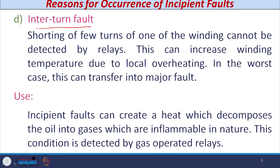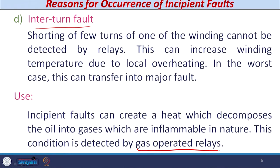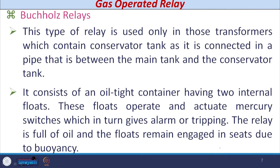Let us see how to detect incipient faults. Whenever incipient faults occur — due to interturn faults, leakage of oil, or other reasons — they produce heat. This heat decomposes the oil into gases, which are inflammable in nature and may create a hazard in the transformer. In actual field practice, this type of incipient fault can be detected by gas-operated relays. There are two types of gas-operated relays: the Buchholz relay and the sudden pressure relay.